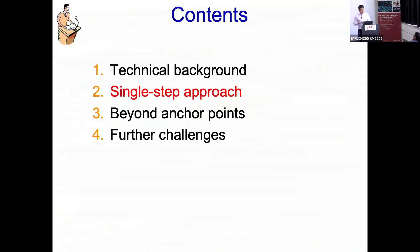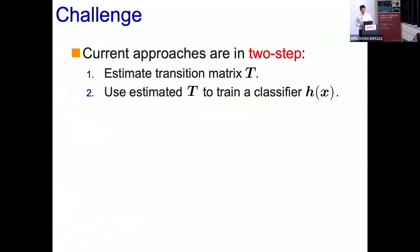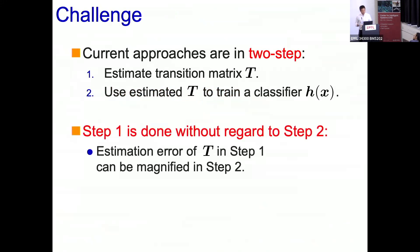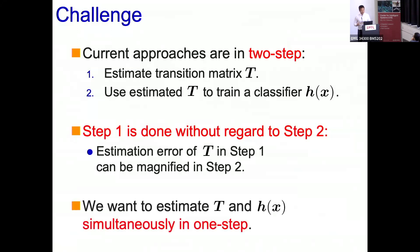Recently we had two nice solutions to overcome existing problems. The first is called a single-step approach. Previous approaches were basically two-step: first estimate the noise transition matrix T to get T hat, then use T hat to train the classifier. But clearly, step one is done without regard to step two — meaning a small error in step one can be magnified in step two, because we didn't consider step two at all when doing step one.